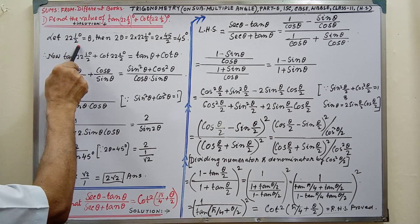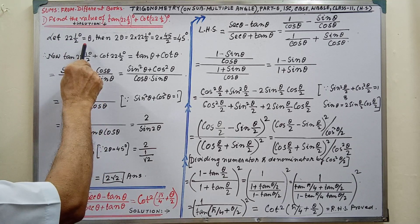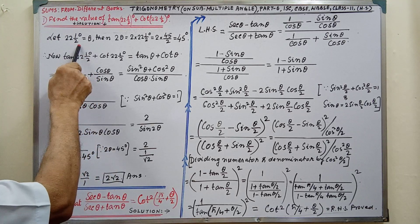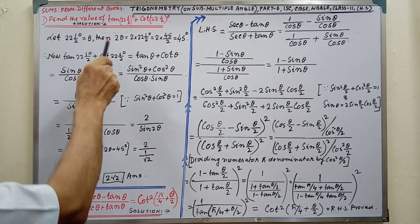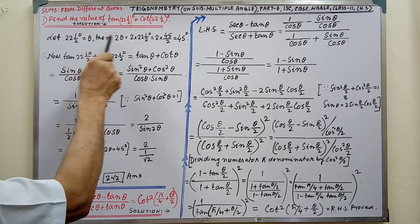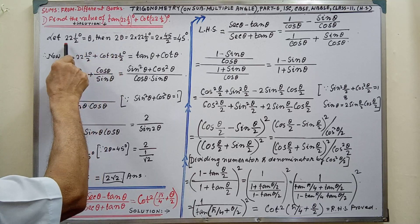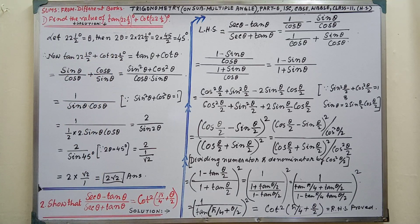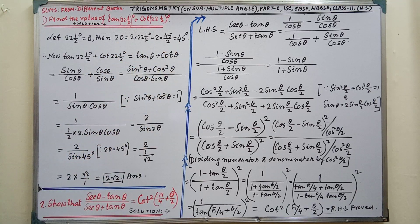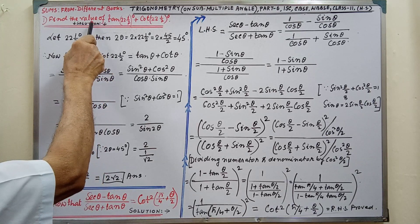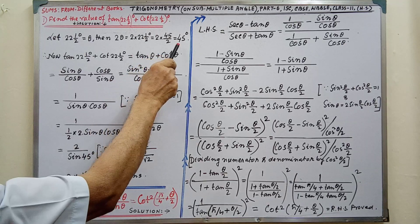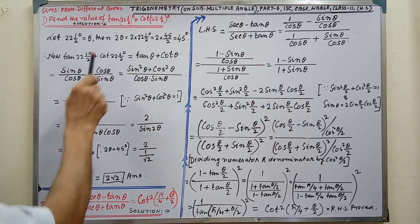Let 22 and half equal to theta. Why are we taking 22 and half degree equal to theta? For easier calculation, we have done this. Then 2 theta equals — you may think, why 2 theta? Because 22 and half degree is not a standard angle. But if we take 2 theta, then we will get 45 degrees, which is a standard angle. We have to find out the value and convert into a known value. I think it is clear.